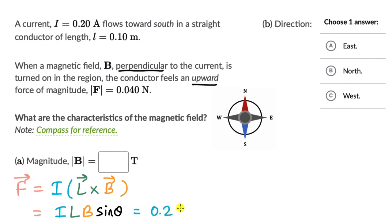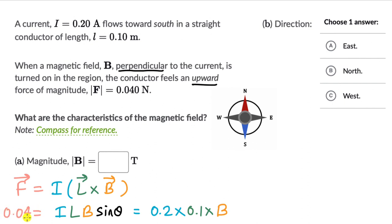Plugging in the values: 0.2 into 0.1 into B equals 0.04 newtons. So 0.02 × B = 0.04, which gives B = 0.04 divided by 0.02. Therefore B equals 0.02 Tesla.